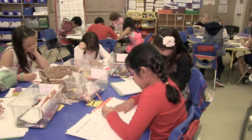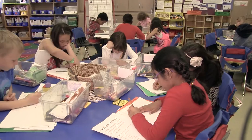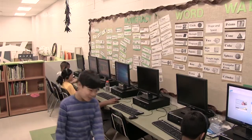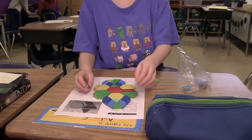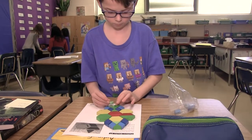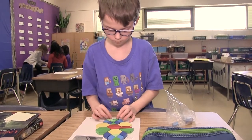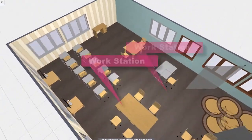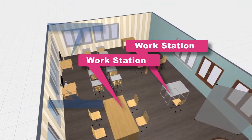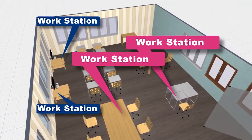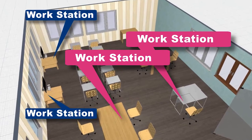Workstations can involve things such as math journaling, a game station, a computer station, or a station where students are independently working on tasks you have set out. They take place all around the room — at the carpet, at the kidney table at the back, at a computer station — using the whole classroom environment to have groups of students engaged in purposeful math tasks.